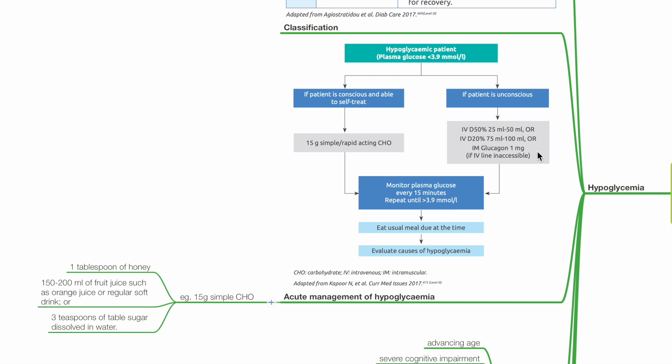Monitor plasma glucose every 15 minutes. Repeat until it is more than 3.9 mmol per liter. Eat usual meal due at the time. If unable to take carbohydrate orally, provide IV glucose. Evaluate cause of hypoglycemia and treat accordingly.